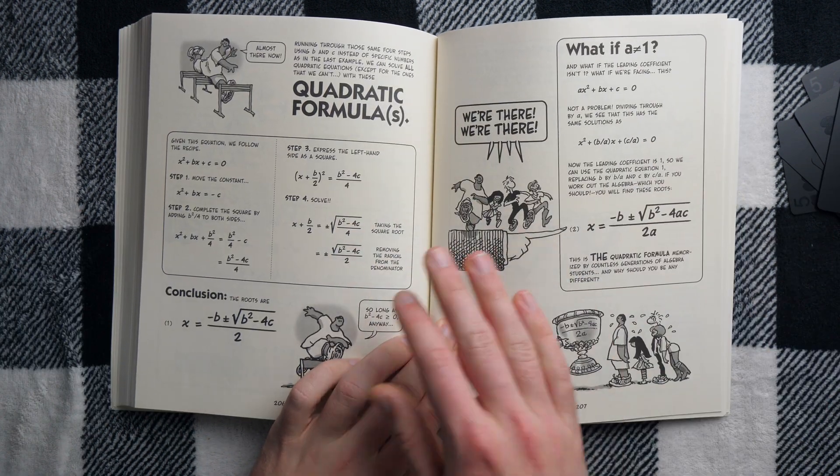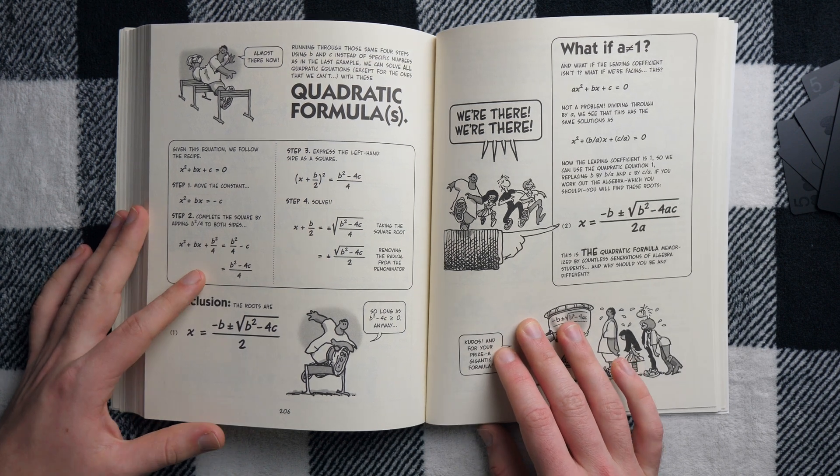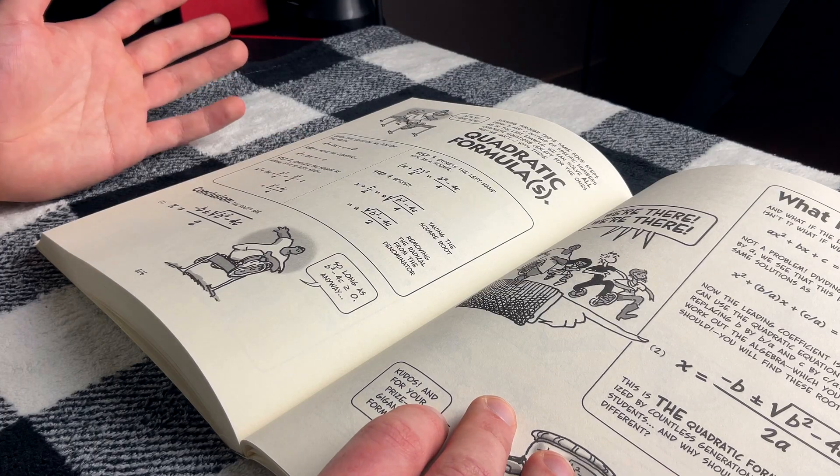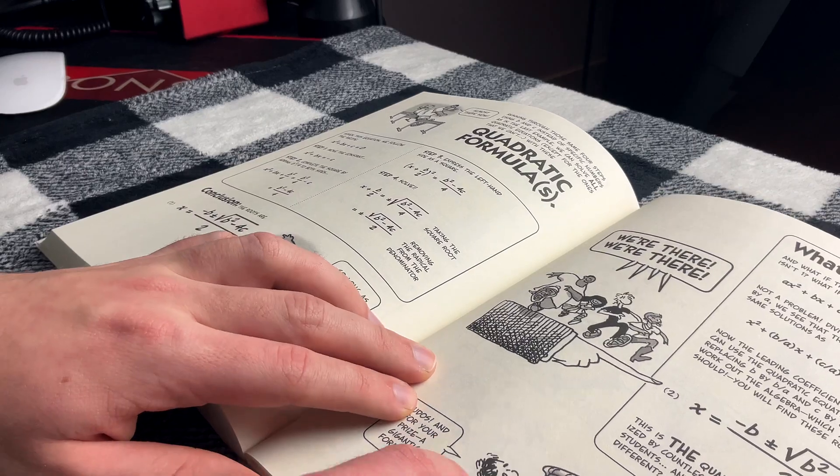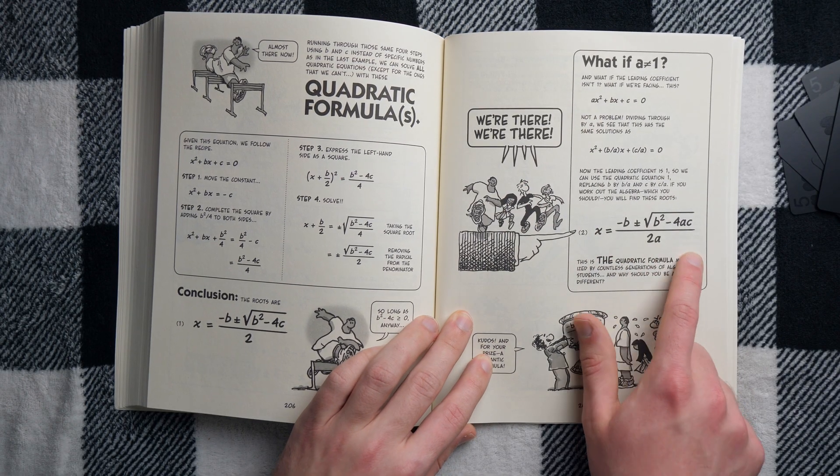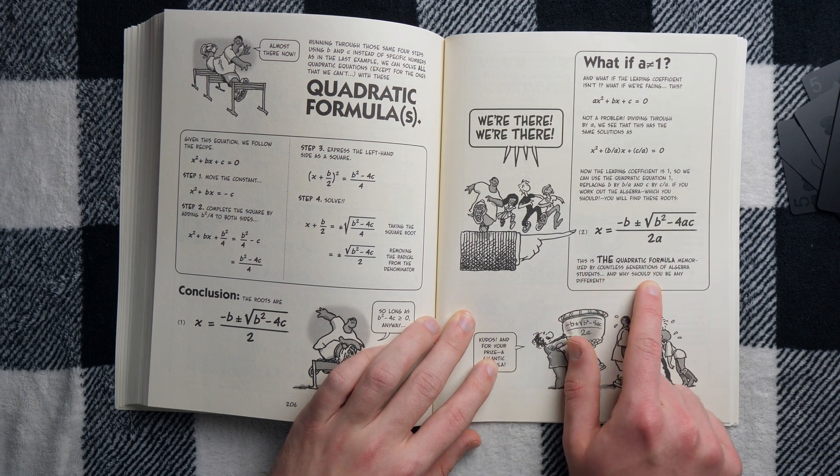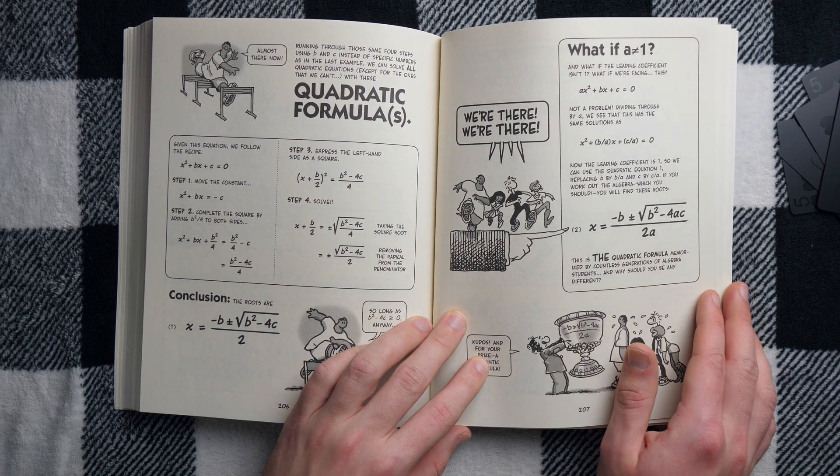And then finally, near the end of the book, they introduce the quadratic formula. I think it's a pretty good treatment. Of course they introduce completing the square first and go through this process in general to show where the quadratic formula comes from. And then the most general case, allowing the leading coefficients to be something other than one. And there you go. This is the quadratic formula memorized by countless generations of algebra students. And why should you be any different? That's right. Memorize this bad boy.